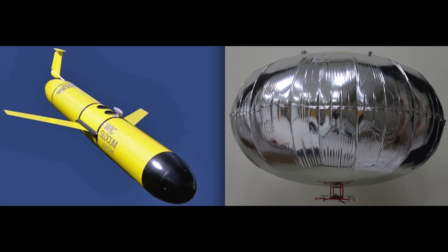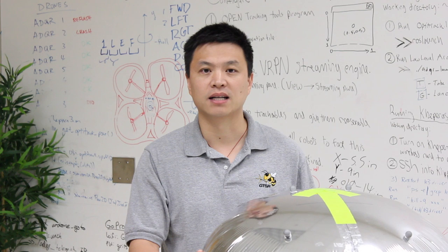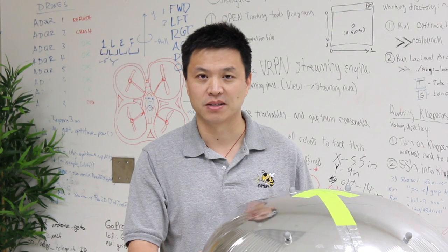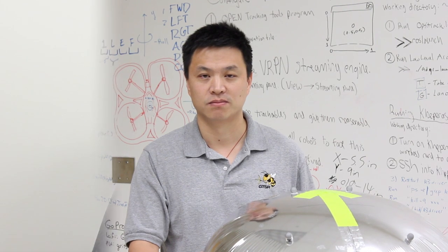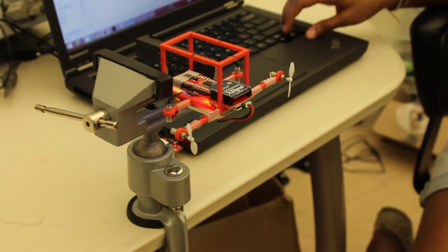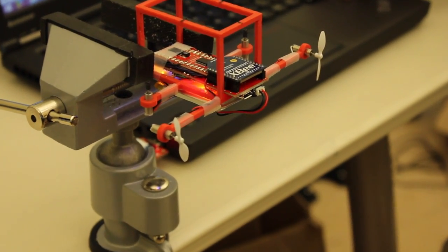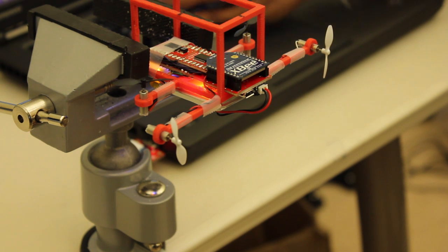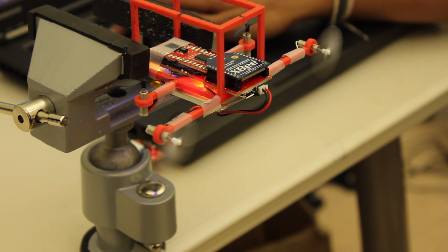We choose blimps because autonomous blimps share a lot of similarities in terms of dynamics with underwater vehicles. The overall system consists of multiple blimps and a central control station. The modular design of the onboard electronics allows the blimps to carry different payloads for specific missions. In this demo, the robot receives and executes commands from the control station and sends telemetry back.